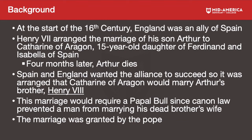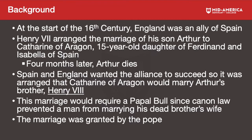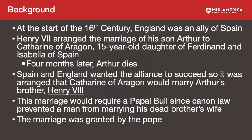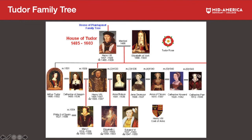Unfortunately, four months later Arthur dies. Spain and England still wanted their alliance to succeed, so it was arranged that Catherine of Aragon would marry Arthur's brother, Henry the Eighth.